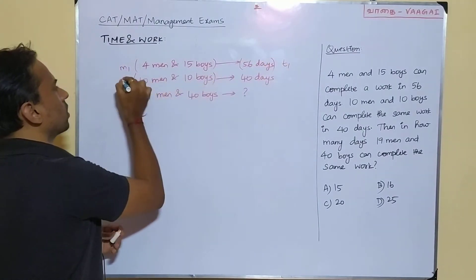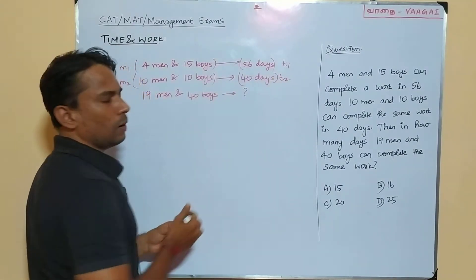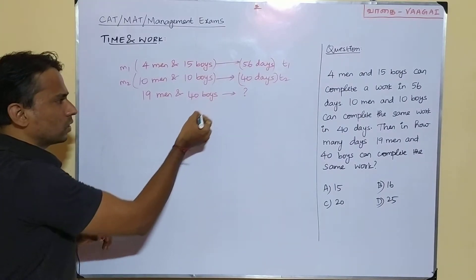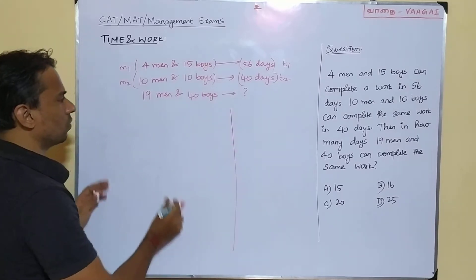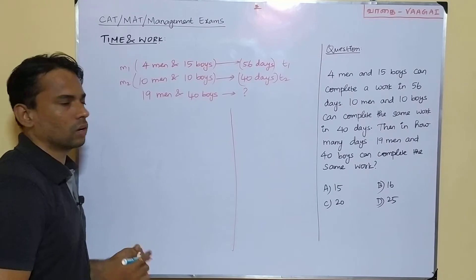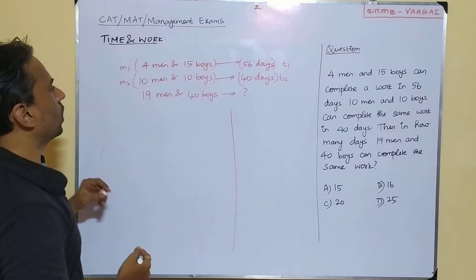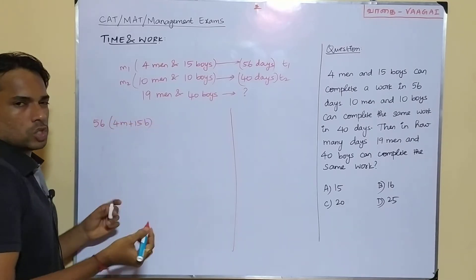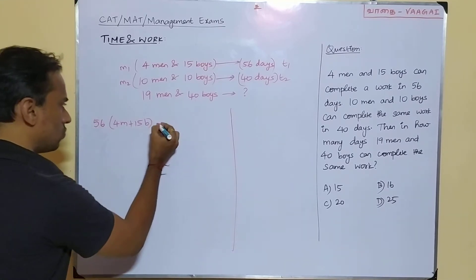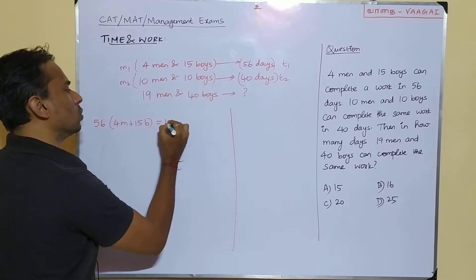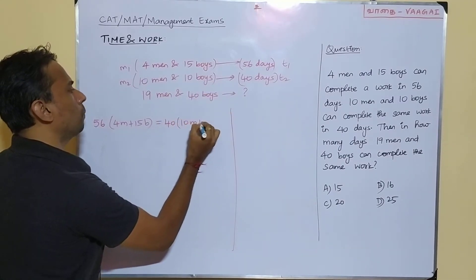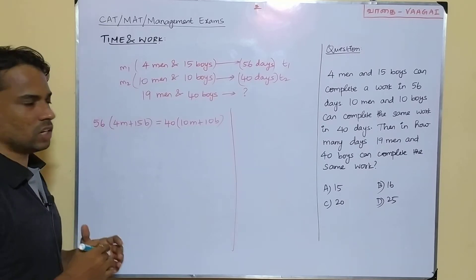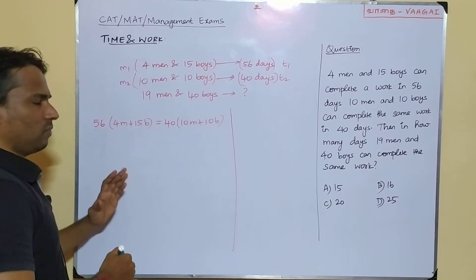We construct the equation using M1×T1 = M2×T2: 56×(4m + 15b) = 40×(10m + 10b). We can simplify 56 and 40 by dividing both by 8, giving us 7 and 5 respectively. Multiplying through: 28m + 105b = 50m + 50b. Rearranging: 105b − 50b = 50m − 28m, giving us 55b = 22m.